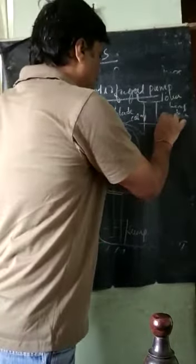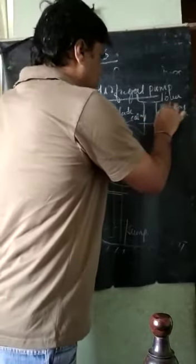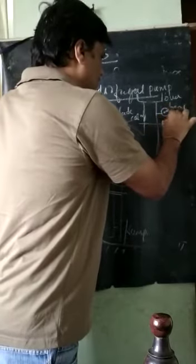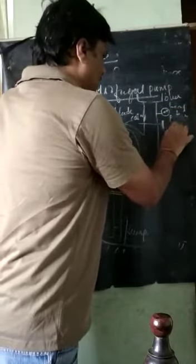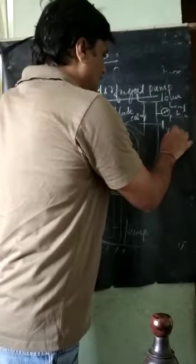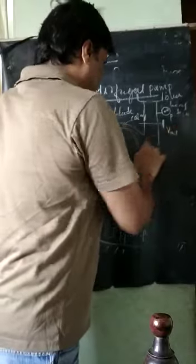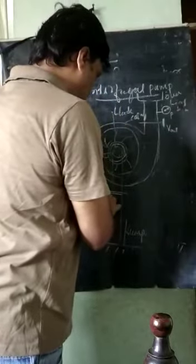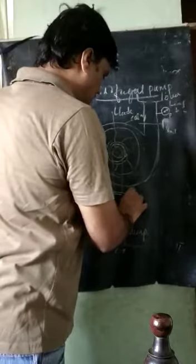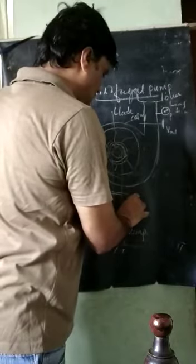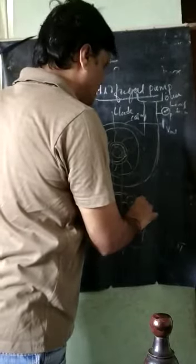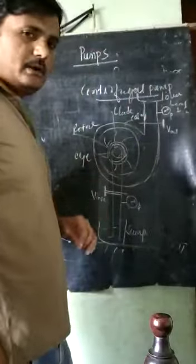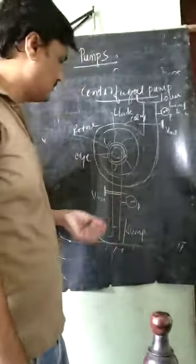There is an inlet pipe with an inlet valve and also an outlet valve. We have pressure measurement here - pressure measurement at the outlet valve and at the inlet as well. We can measure both pressures.